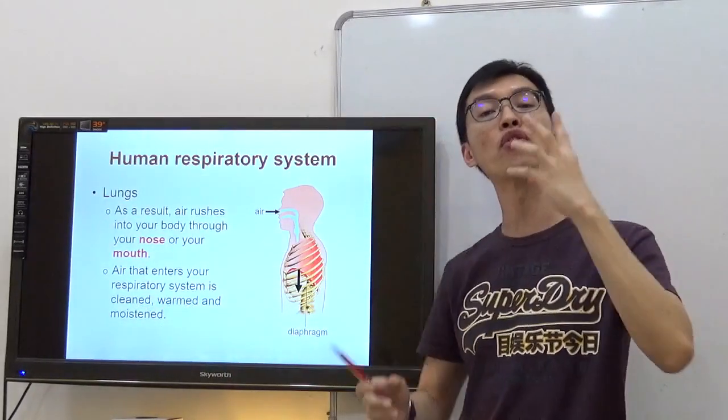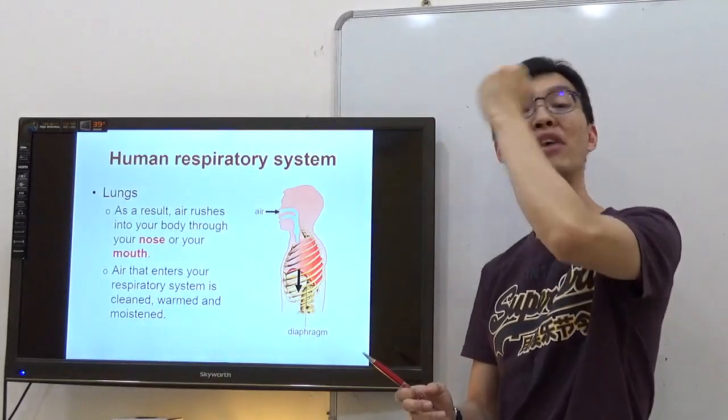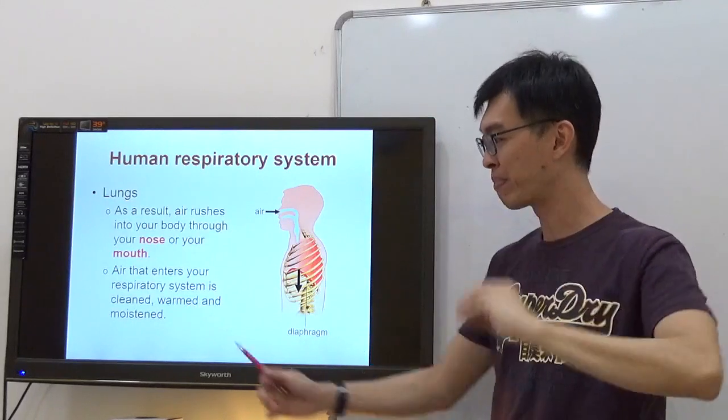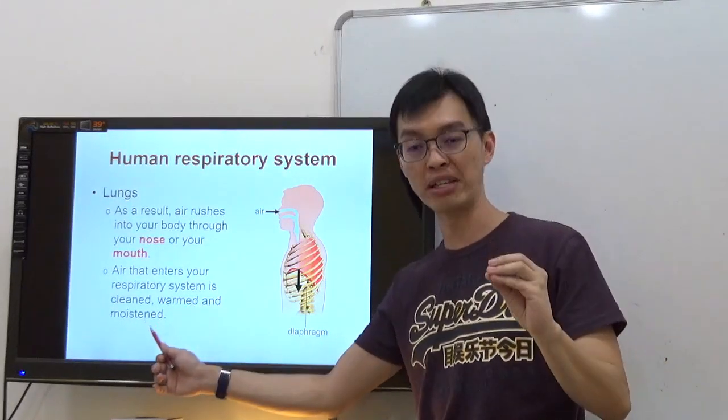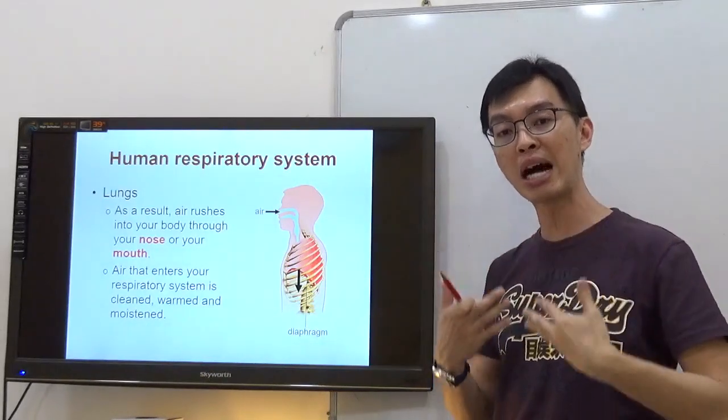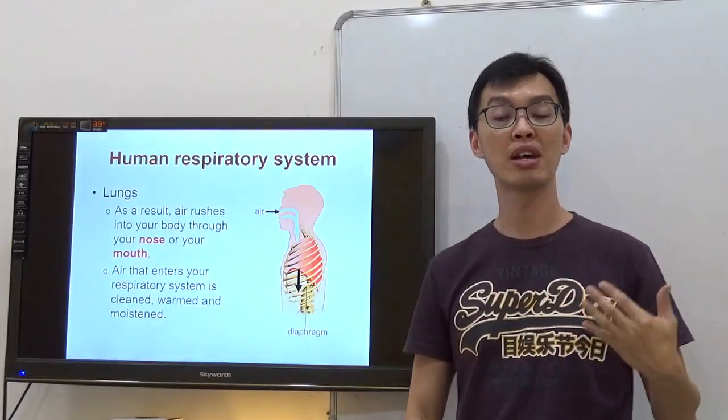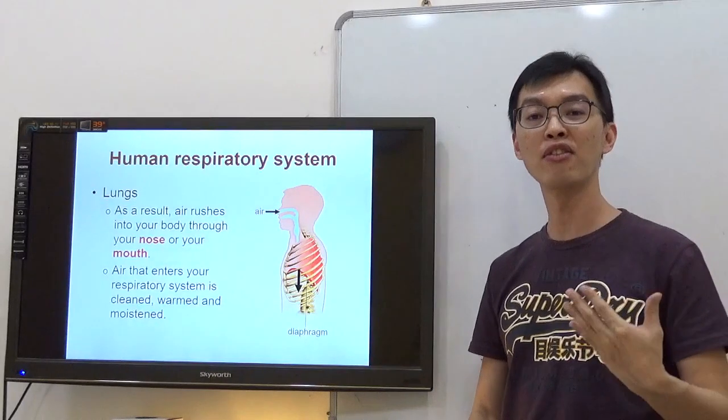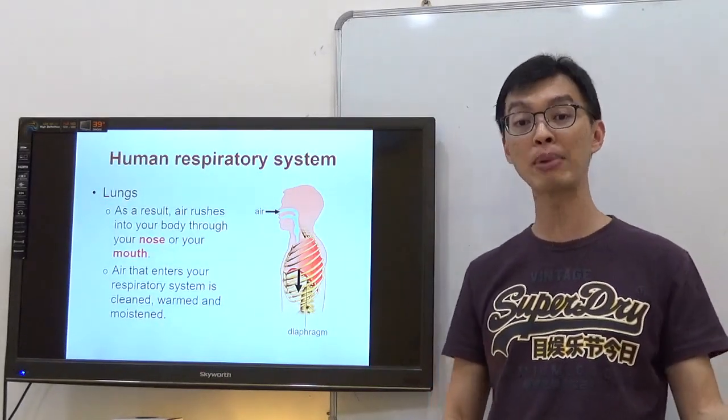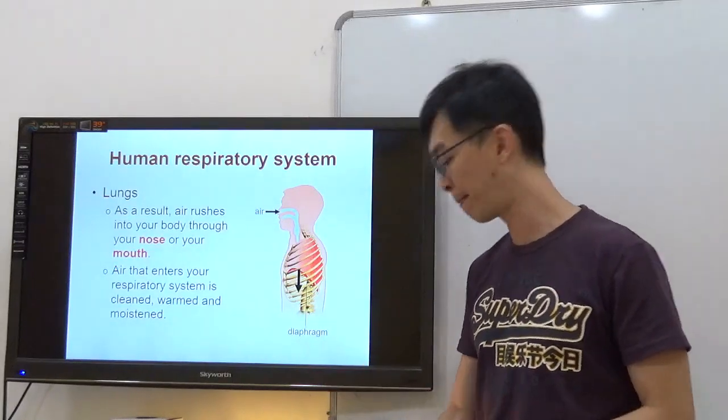When it goes through the nostril, you feel cold air going in, but then it gets warmed up and becomes moist. Your air becomes moist so that when it goes into your lungs, you can use that oxygen for your blood. Your blood will carry oxygen-rich blood to all parts of your body.